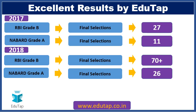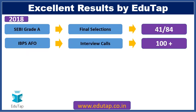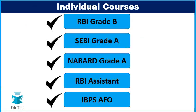Our institute has achieved excellent results: in 2017, RBI Grade B had 27 final selections and NABARD Grade A had 11. In 2018, RBI Grade B had 70+ selections and NABARD Grade A had 26. In the 2018 SEBI Grade A exam, 41 out of 84 total selections were our students. In IBPS AFO, our students received 100+ interview calls. Courses offered include RBI Grade B, SEBI Grade A, NABARD Grade A, RBI Assistant, and IBPS AFO.